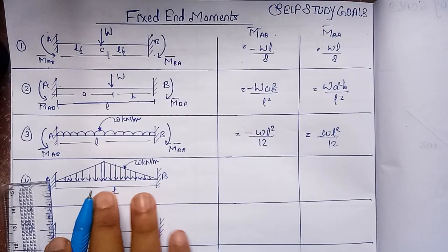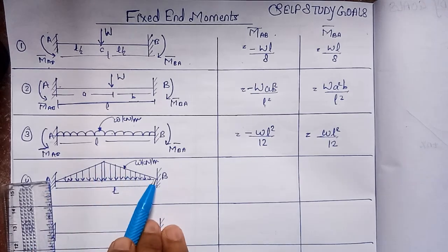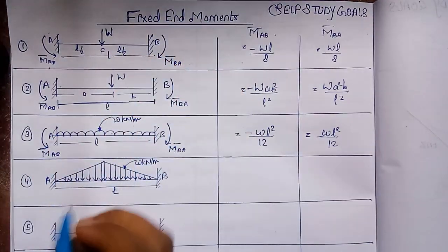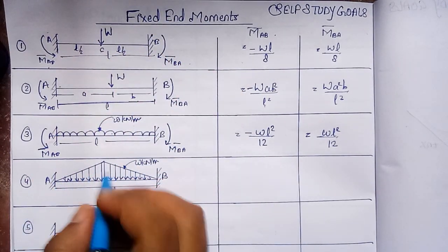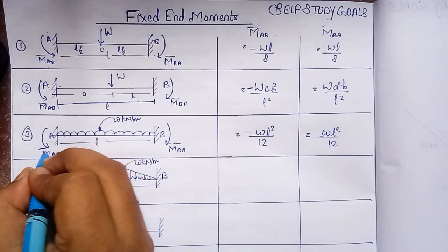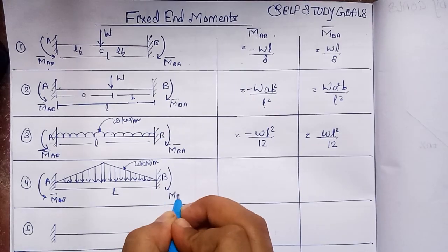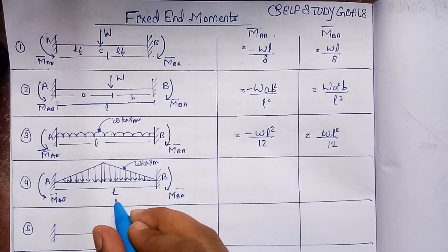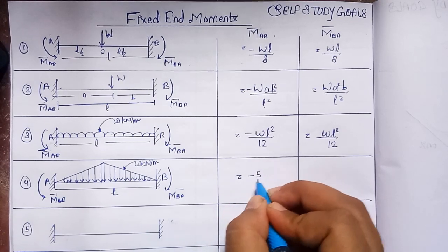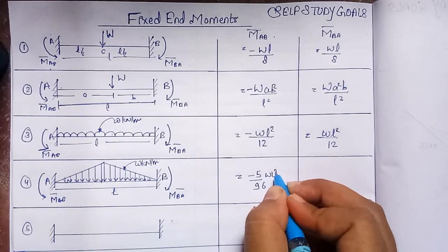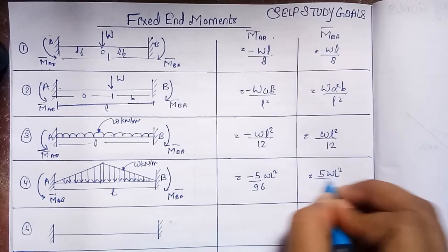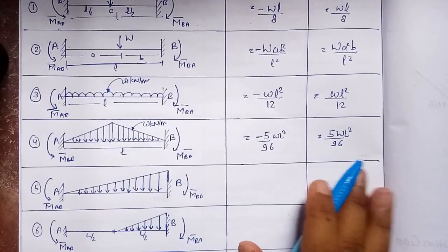The fourth case is when a uniformly varying load (UVL) — triangular in shape — is applied on the fixed beam. The fixed end moment at joint A is anti-clockwise, so M-bar_AB = −5wL²/96. For joint B, the moment is clockwise, so M-bar_BA = +wL²/96. Note the difference in the numerator coefficients: 5 for joint A and 1 for joint B.